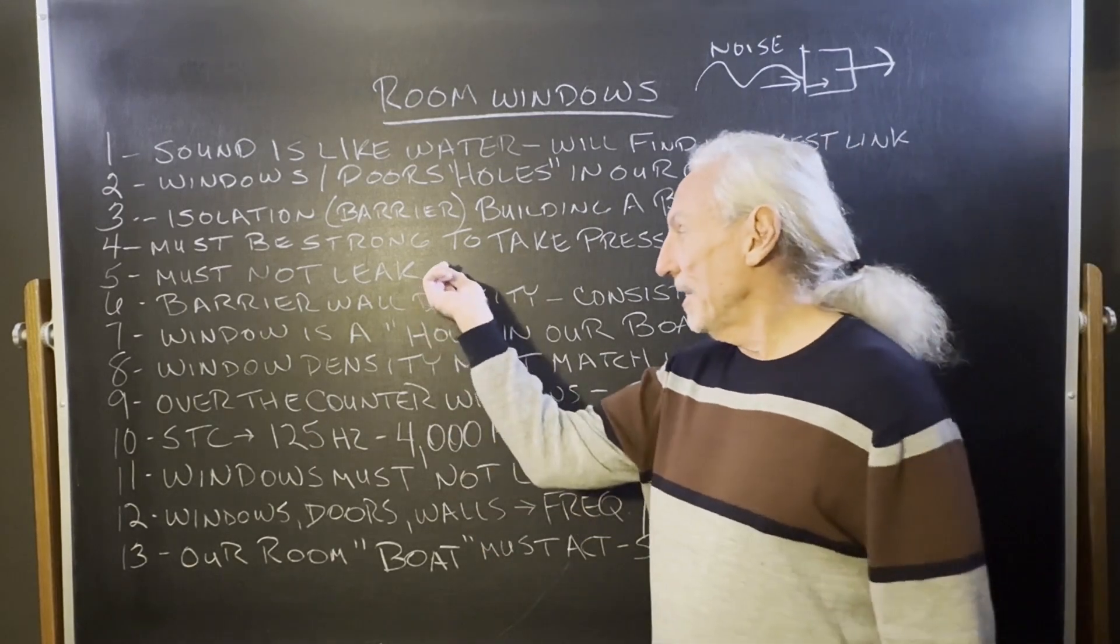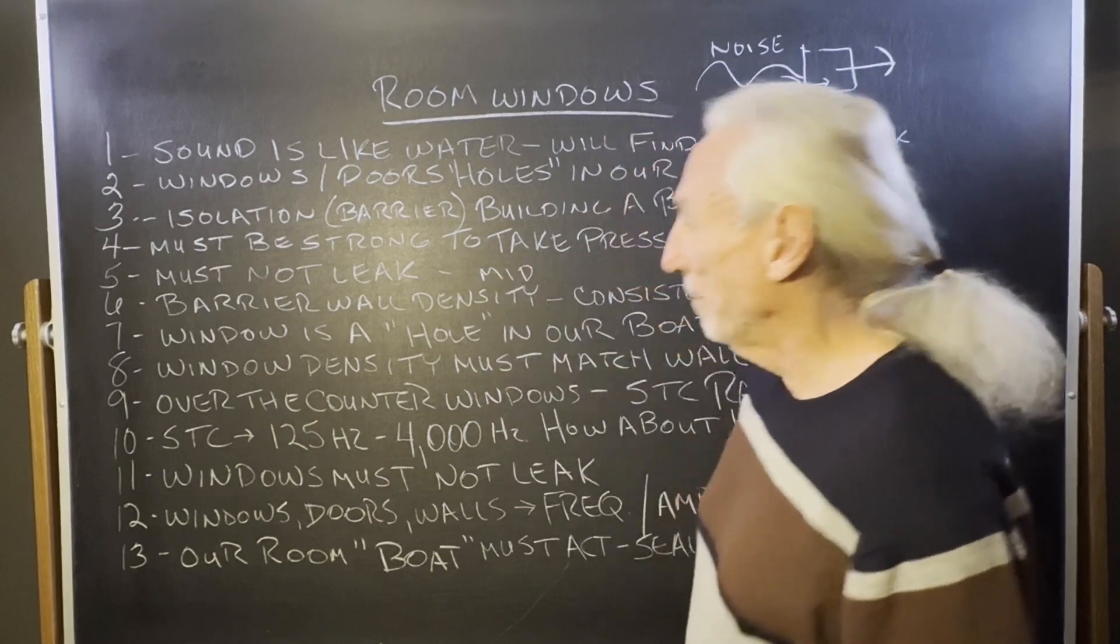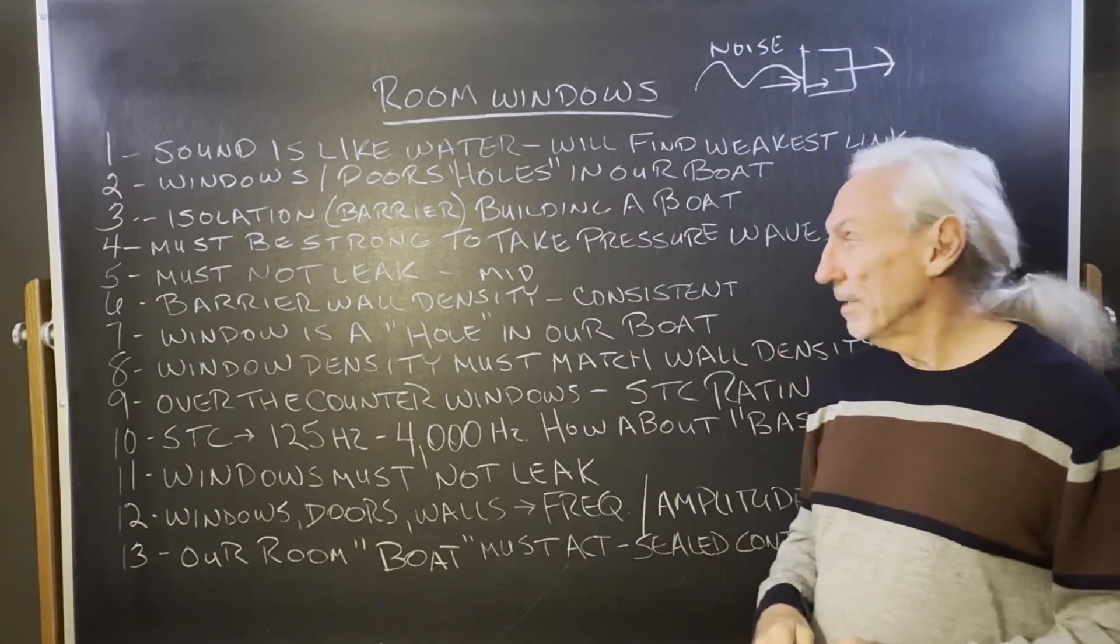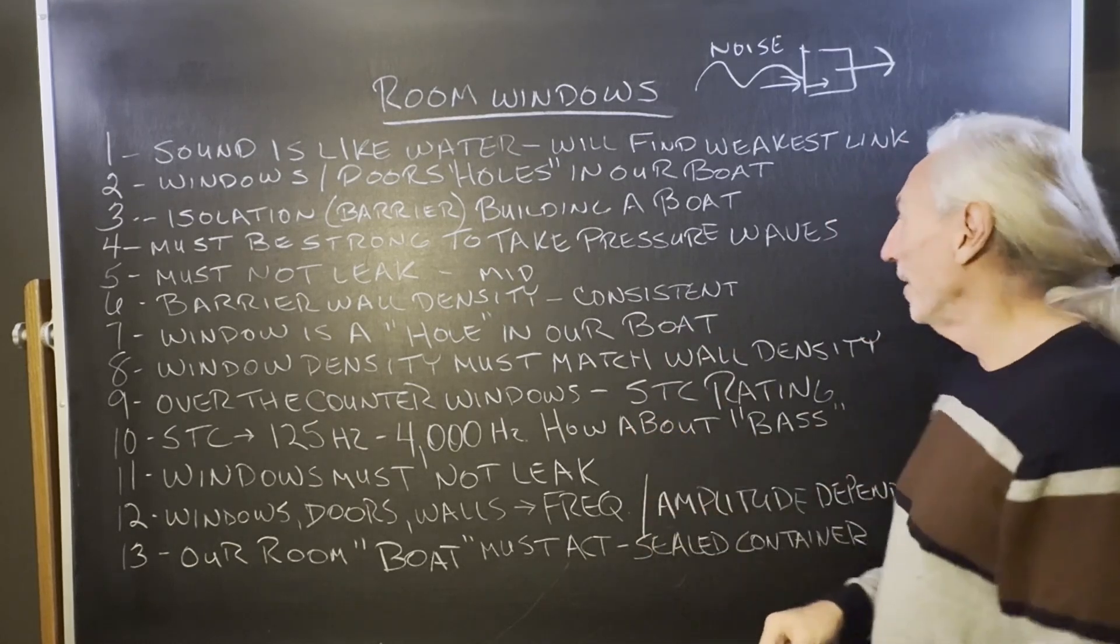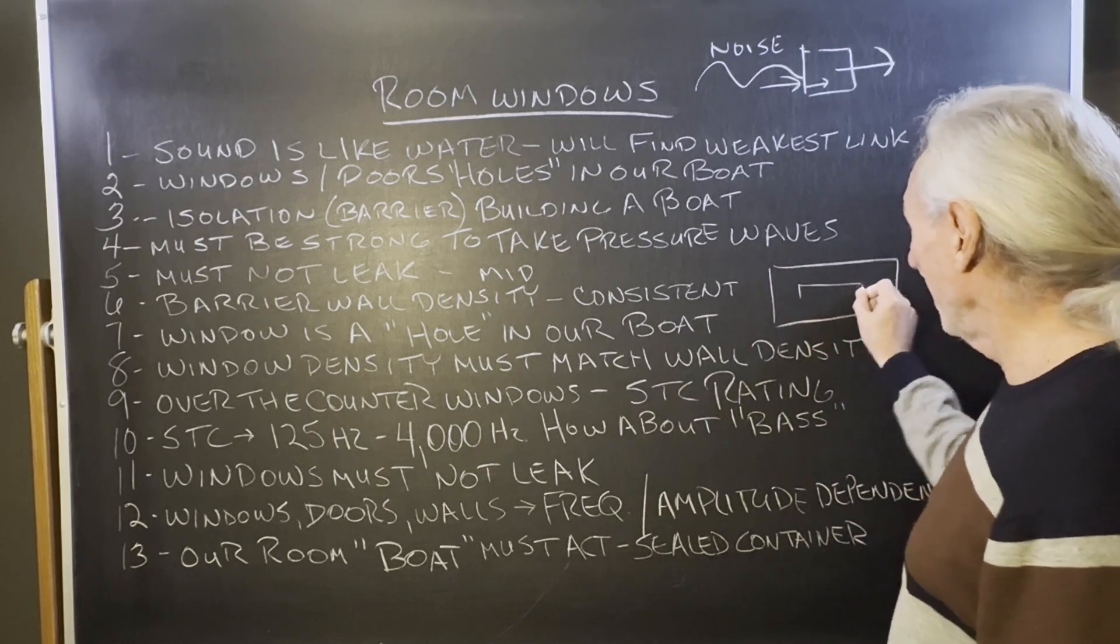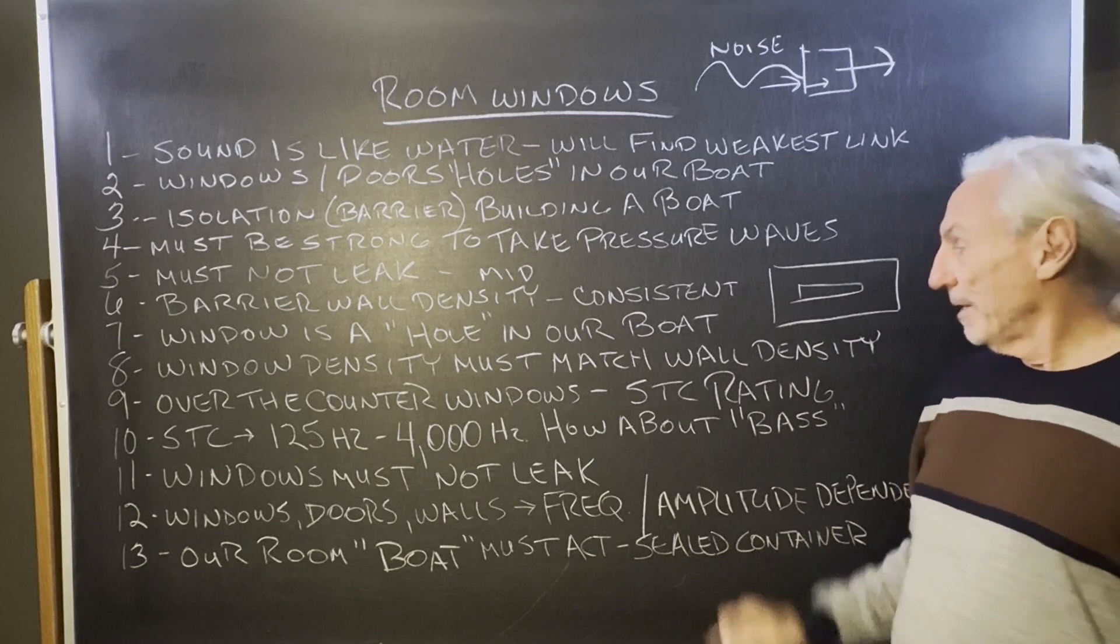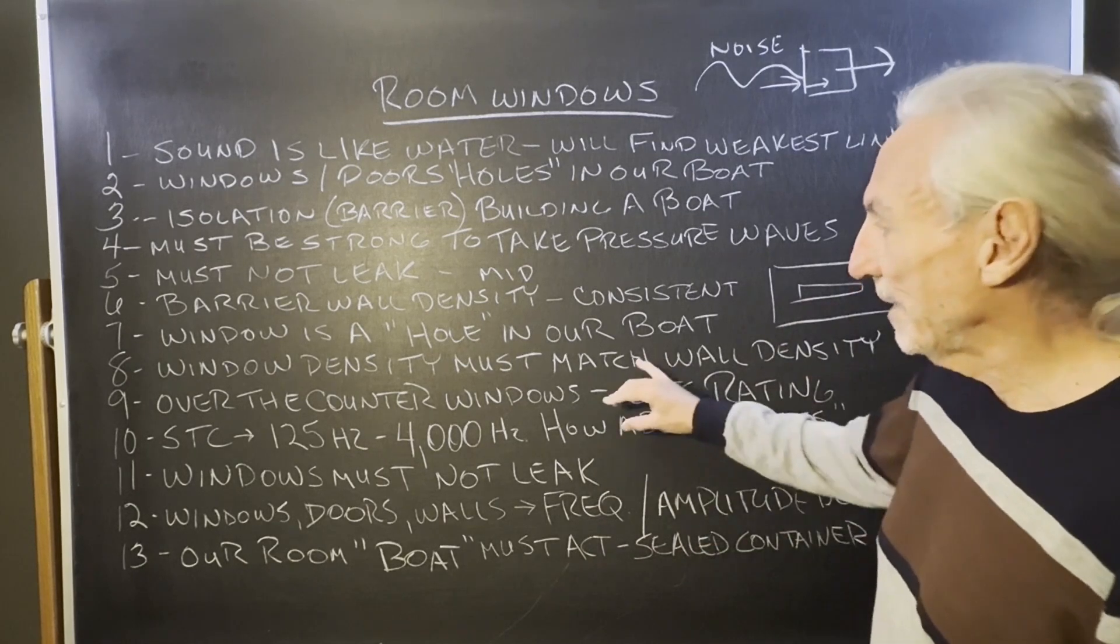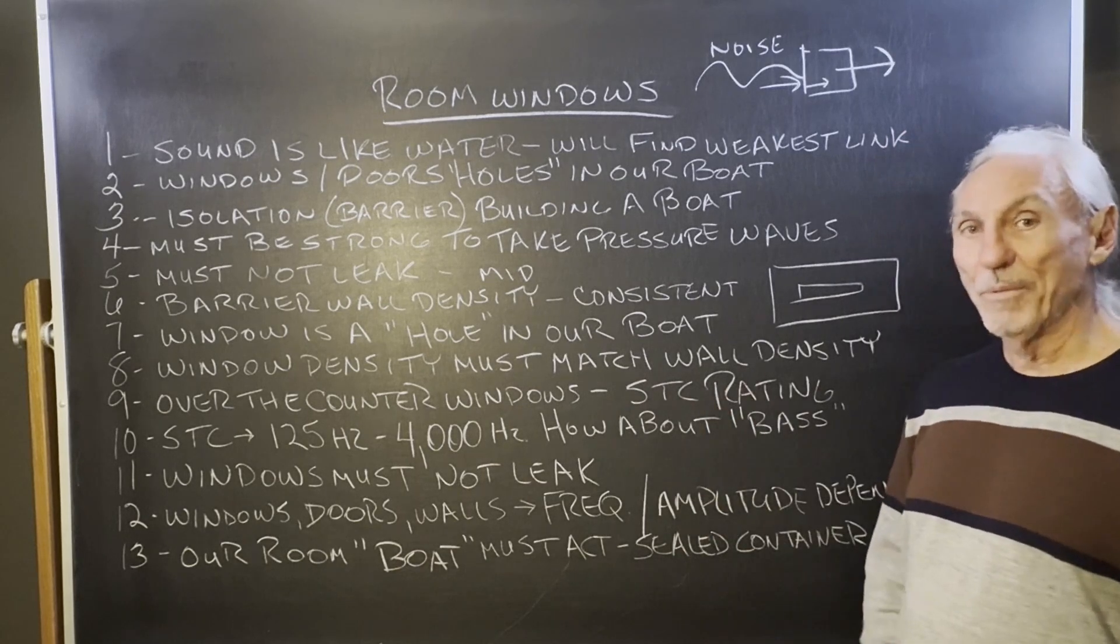And it can't leak because the leak really affects the middle frequencies, and you have to be careful there. So the barrier wall density is very critical, and the density must be consistent through the whole wall. Well, if we draw a wall and we have a window in it, we can see the inconsistency right away.